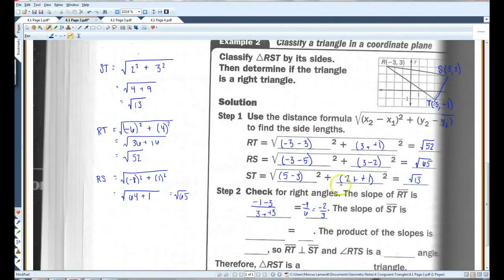Okay. The slope of ST, let's see here. The y's would be 2 minus negative 1. The x's would be 5 minus 3. Becomes positive. So, I've got 3 over 2, positive.